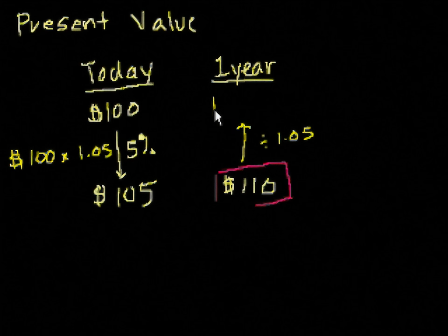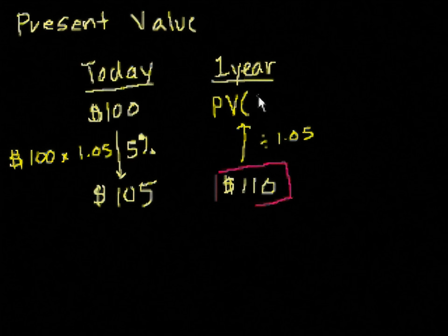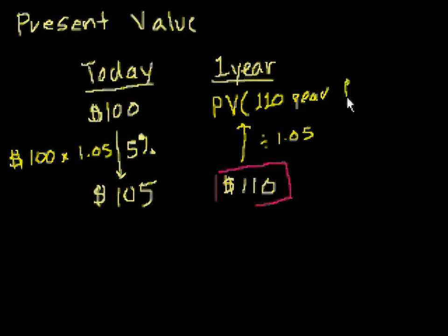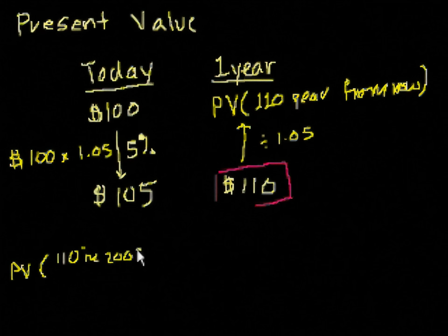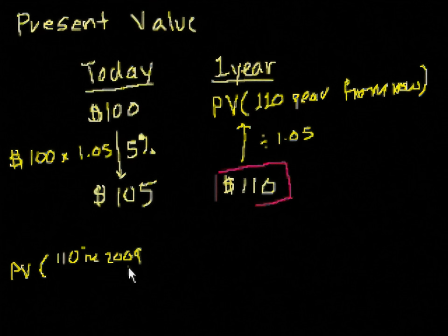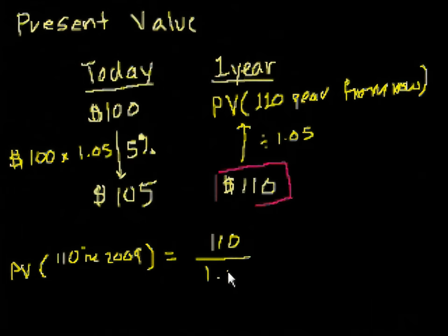And then we will get the present value, and the notation is PV, we'll get the present value of $110 a year from now. So the present value of $110 in 2009, it's currently 2008, assuming right now is 2008, a year from now...